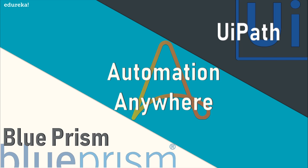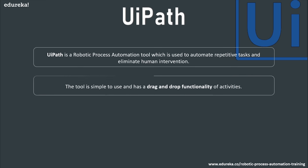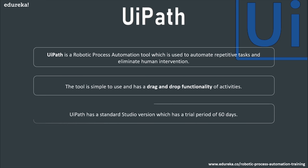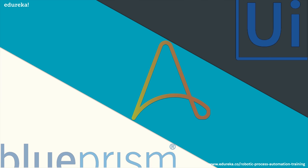UI Path is also a robotic process automation tool used for Windows desktop automation. It automates repetitive or redundant tasks and eliminates human intervention. This tool is simple to use and has drag-and-drop functionality. UI Path offers a standard studio version with a 60-day trial period, and also a community edition that is free for lifetime with most of the studio version's functionality.